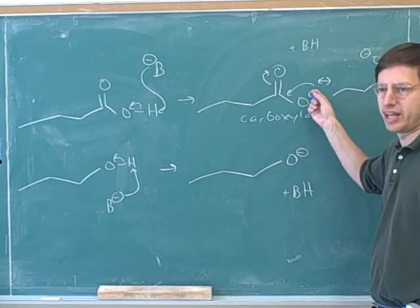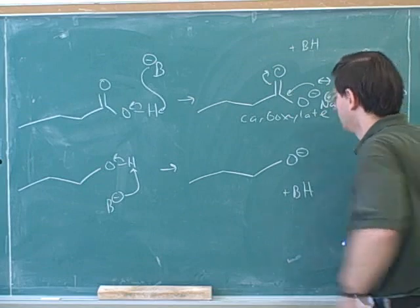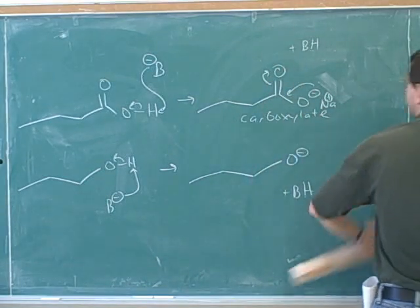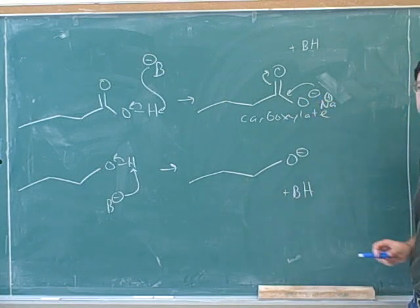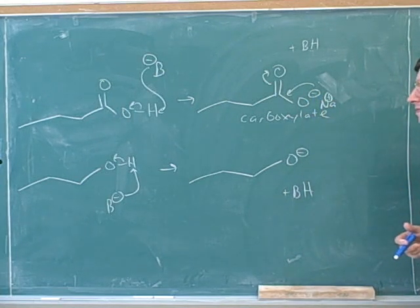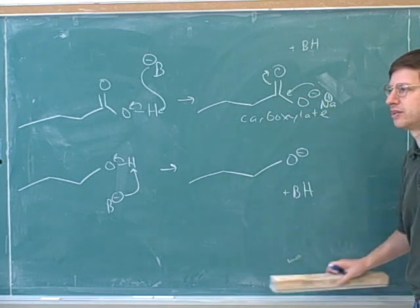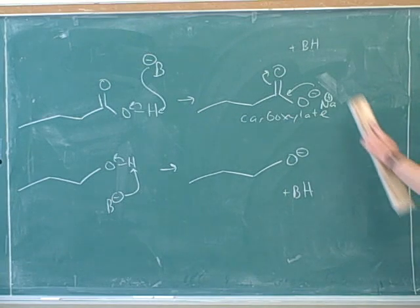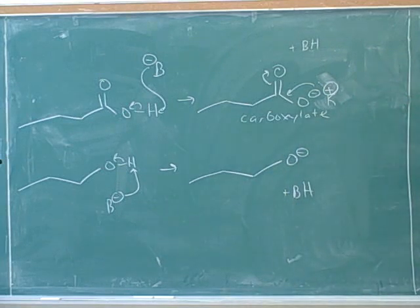Usually there would be some counterion stabilizing this negative charge. For example, this is what we would call sodium carboxylate, or a sodium carboxylate salt. Salts are just another name for an ionic compound. So the name for this would be sodium carboxylate. Or this would be potassium carboxylate.